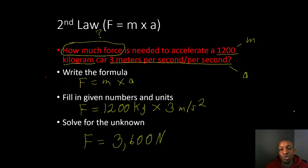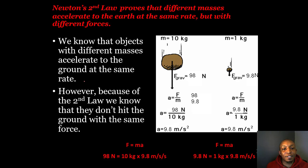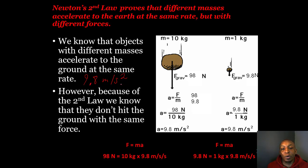Newton's second law also proves that different masses accelerate to the earth at the same rate but with different forces. The rate of acceleration due to gravity on Earth is always 9.8 meters per second squared — this can change on a different planet or on the moon. However, because of the second law, we know that objects don't hit the ground with the same force.